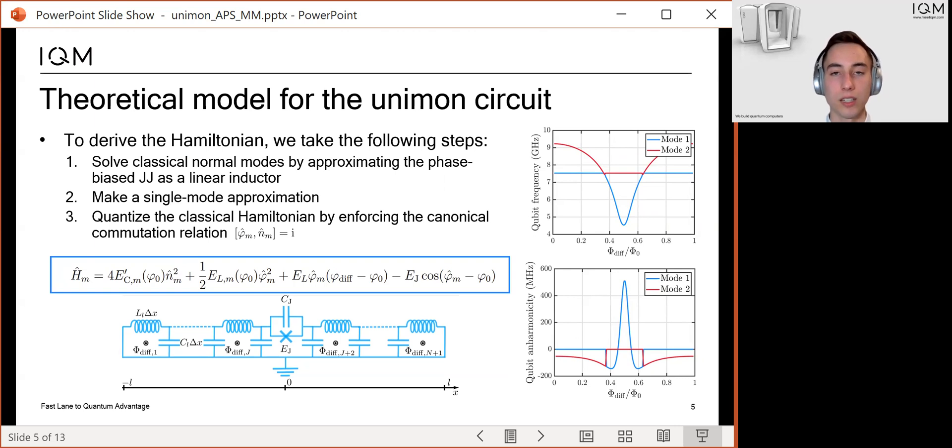Finally, we quantize the classical Hamiltonian of the qubit mode and enforce the canonical commutation relation between the charge and phase operators. This procedure gives us a result that is a bit similar to the Hamiltonian of a fluxonium.